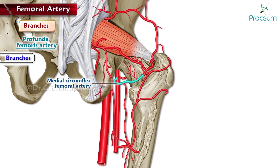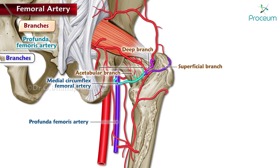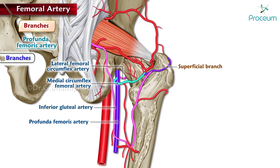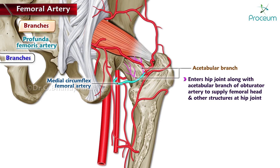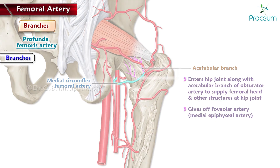The medial circumflex femoral artery arises from the medial and posterior aspect of the profunda and winds around the medial side of the femur. It divides into superficial, deep, and acetabular branches. The superficial branch anastomoses with the inferior gluteal, lateral femoral circumflex, and first perforating arteries in the cruciate anastomosis. The acetabular branch enters the hip joint along with the acetabular branch of the obturator artery to supply the femoral head, giving off the foveolar and medial epiphyseal arteries.